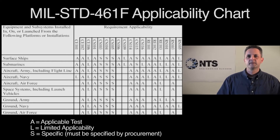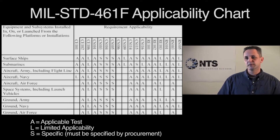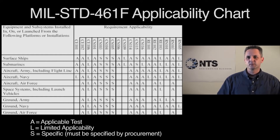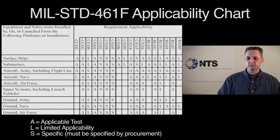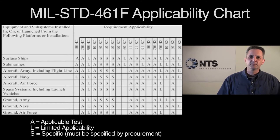Along the top of the chart lists all of the applicable tests in MIL-STD-461F. For example, the top line shows surface ships — equipment that could be installed in surface ships, regardless if it's topside or below decks. CE-101 and CE-102 would be applicable tests. CE-106 is shown as an 'L', which stands for limited applicability. CS-103, 104, and 105 are specific, mainly dependent on the type of equipment. CS-109 is a limited applicability test. CS-114 is an applicable requirement. CS-115 is specific to the equipment. CS-116 is an applicable conducted susceptibility test. RE-101 and RE-102 are both applicable. RE-103 is limited. RS-103 and RS-101 are both applicable, and RS-105 is in limited application.